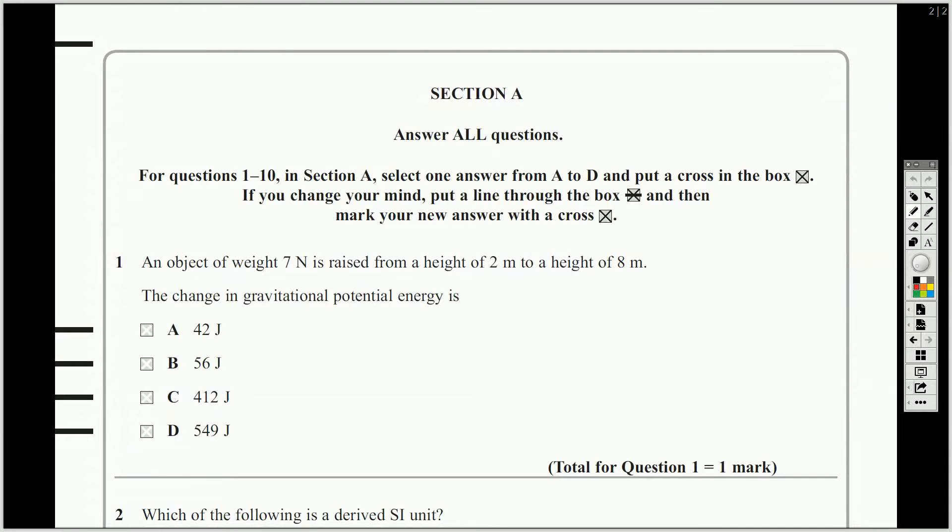The first one is a question about gravitational potential energy. We can see that straight away. It's asking you to calculate the change in gravitational potential energy. It gives you a weight and gives you 2 metres to 8 metres. So this is just simply applying the equation gravitational potential is equal to mg delta H, mass times gravitational acceleration times the change in height.